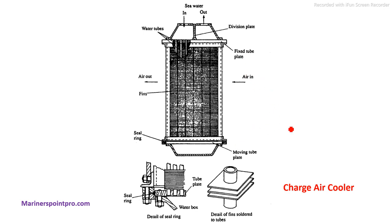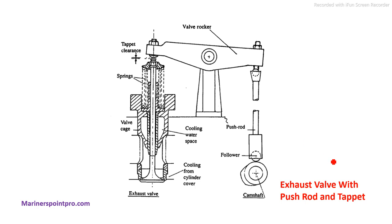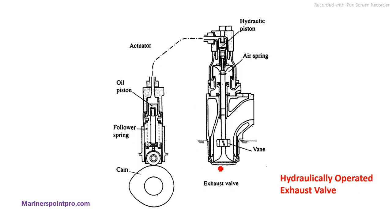Next is the exhaust valve. Exhaust valves are of two types: push rod and tappet operated, and hydraulically operated. This is the exhaust valve with push rod and tappet clearance. We have the cam, follower, push rod, valve rocker, and tappet clearance. Also read through the technical notes on what happens when tappet clearance is more and what happens when it is less. Then we have the spring, valve cage, and cooling water space.